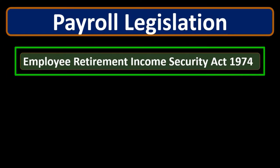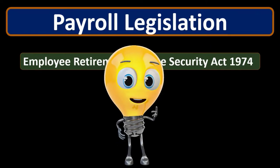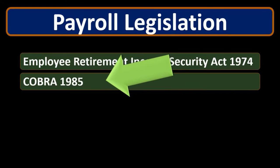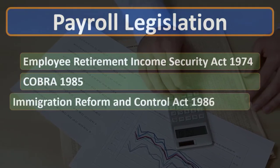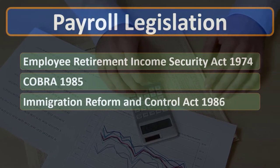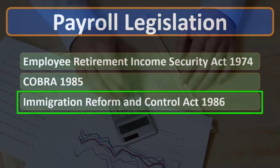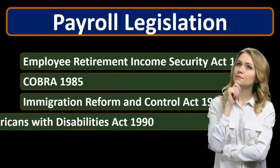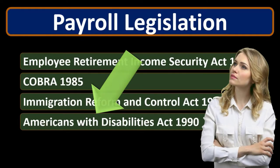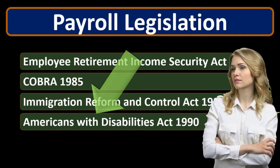We have the Employee Retirement Income Security Act of 1974, which protects and safeguards retirement fund accounts for employees. We have COBRA of 1985, which allowed for health insurance continuation after termination, so someone doesn't lose their health insurance — there must be a requirement for that continuation. The Immigration Reform and Control Act of 1986 deals with employers having proof of employment eligibility within 20 days of employment, giving more responsibility to the employer to verify employee eligibility. We have the Americans with Disabilities Act of 1990, which protects the rights of disabled workers.